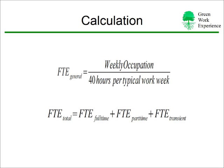The general FTE calculation is quite simple: it's the weekly occupation hours divided by a 40-hour typical work week. In order to get the total FTE for your building, you add the full-time, part-time, and transient FTE rates together.